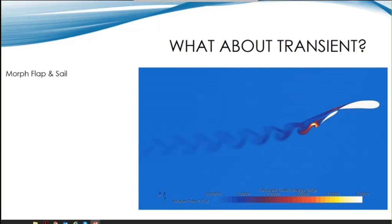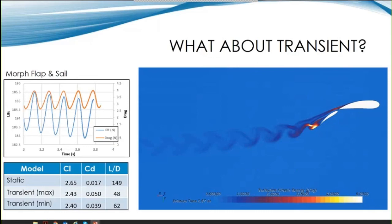For the morphing flap and sail, the transient results are quite different. The lift is significantly lower, and the drag far higher.